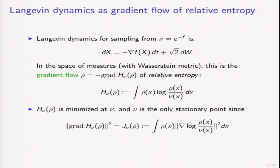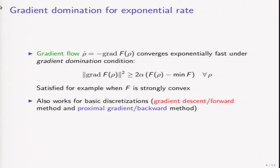Relative entropy is nice because it is non-negative, it's minimized at the target measure, and moreover the target measure is the only stationary point because the squared gradient is the Fisher information. From the abstract theory, we know that gradient flow converges exponentially fast under a condition known as gradient domination. This is satisfied, for example, when F is strongly convex. Moreover, this exponential rate also holds for basic discretizations such as gradient descent and proximal gradient.